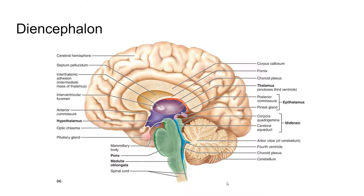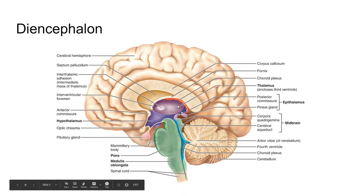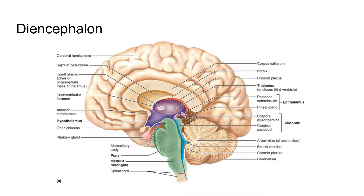We're going to first talk about this area called the diencephalon. The diencephalon on this picture is the purpley area there. This involves three pieces: the thalamus, the hypothalamus — so under the thalamus — and the epithalamus on the thalamus. We're going to talk about the function for two of these, the hypothalamus and the thalamus.